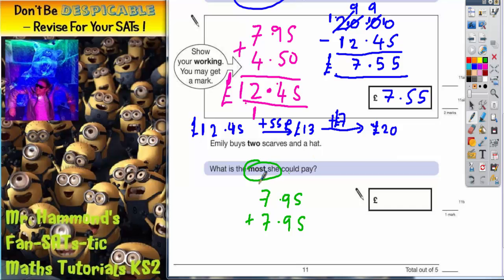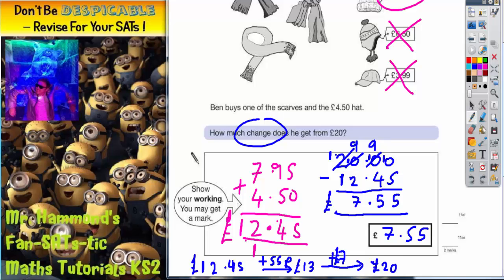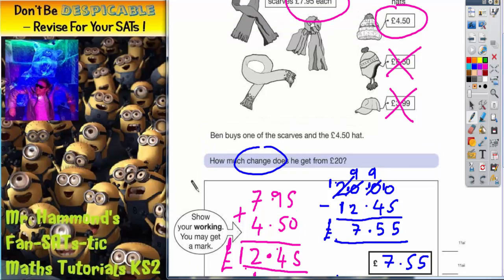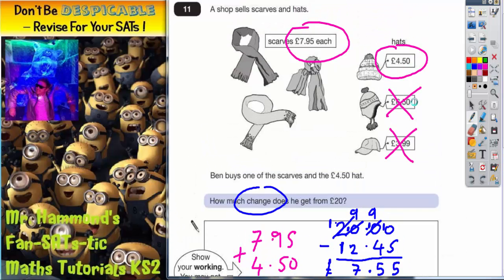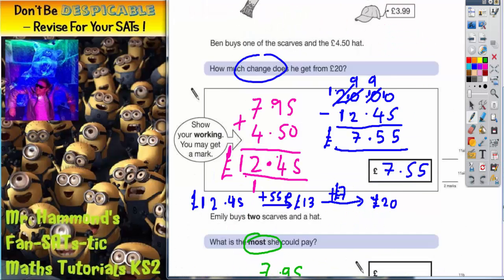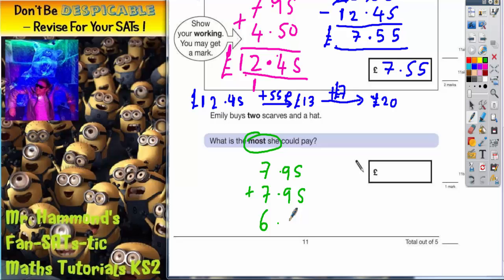And she buys a hat. But we're interested in what the most she could pay. So she's obviously going to buy the most expensive hat. Now the most expensive hat, might need to unrub these. The most expensive hat is this one, £6.50. So she's going to be buying the £6.50 hat.